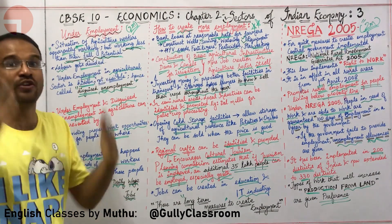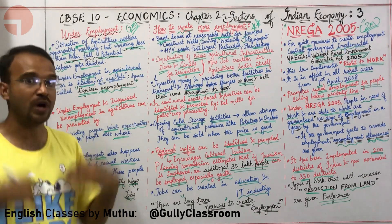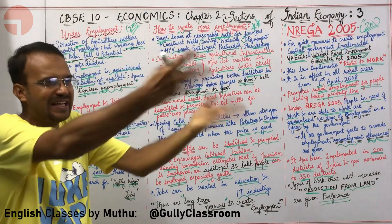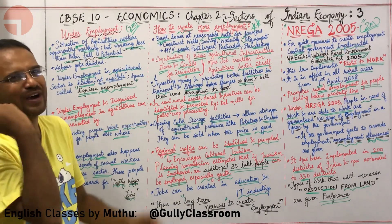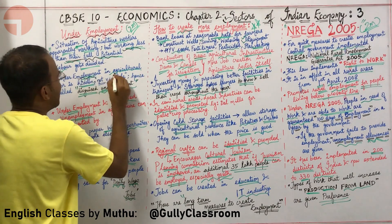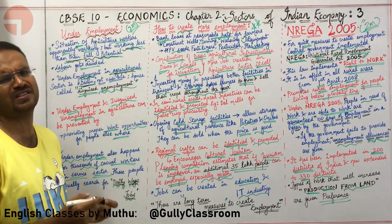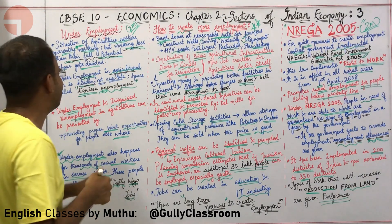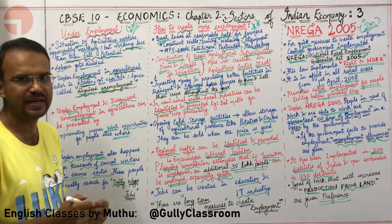In underemployment, the work done by one person at full capacity is being done by four people, with each resting for the remaining time. Underemployment in the agricultural sector is hidden and not obviously visible because people are always appearing to work.